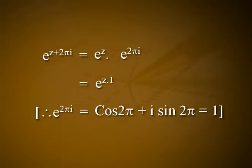Note that eᶻ is periodic with a pure imaginary period of 2πi. That is, e^(z+2πi) = eᶻ · e^(2πi) = eᶻ · 1, because e^(2πi) = cos 2π + i sin 2π = 1. Therefore, e^(z+2πi) = eᶻ for all z.